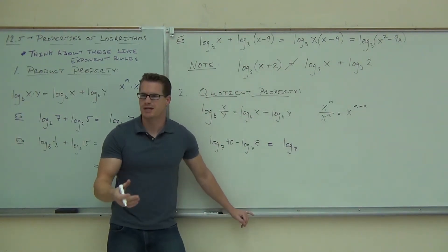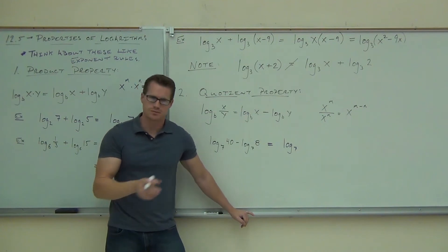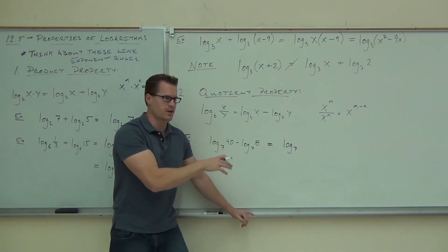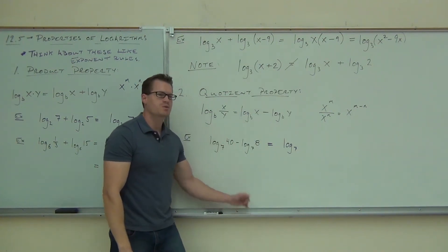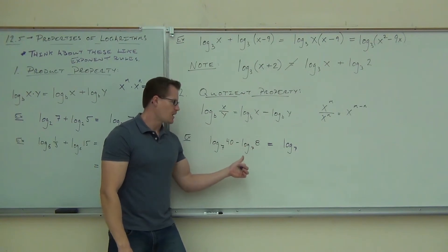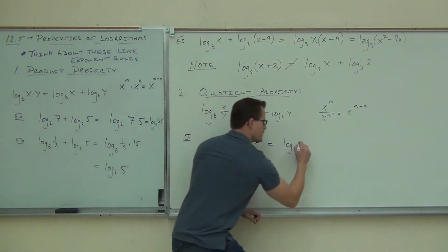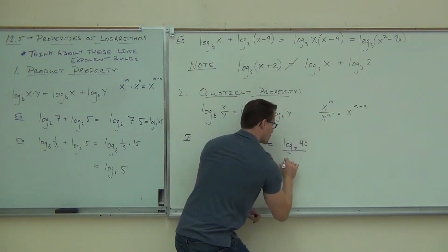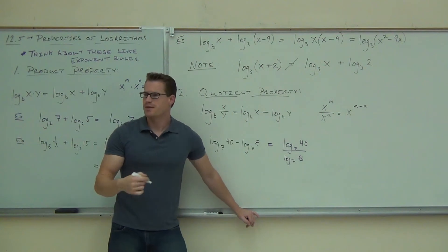I need you to look up here because this is another mistake that people often give me. I'm going to show these mistakes to you that way you don't make them. A lot of times people confuse this and they say, well log base 7 of 40 minus log base 7 of 8, well that should be log base 7 of 40 over log base 7 of 8. Do you see how they could make that mistake?